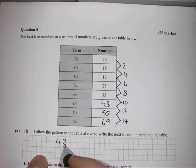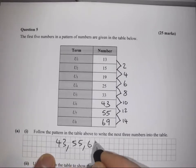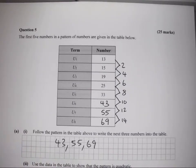To write the next three numbers we've already done it, but we could emphasize it here: 43, 55, and 69.